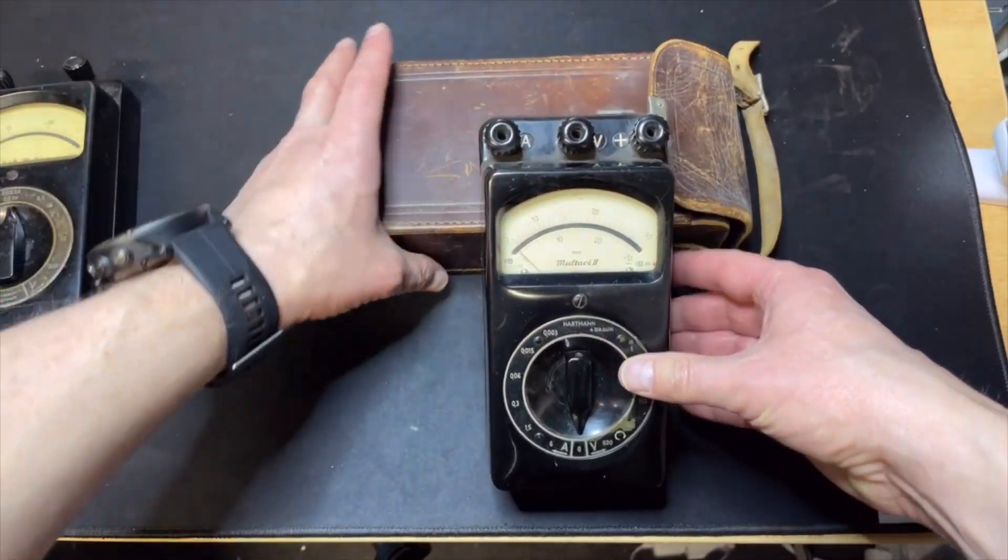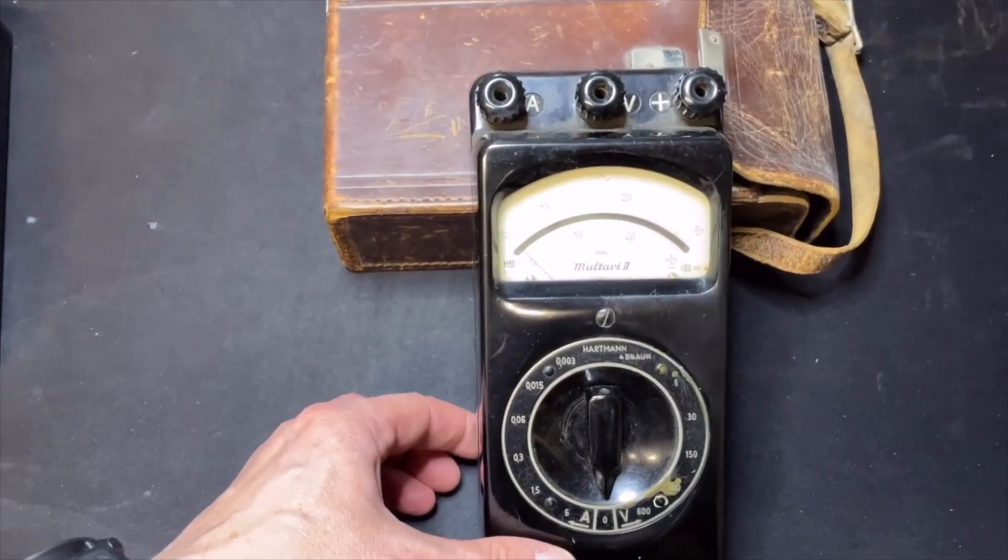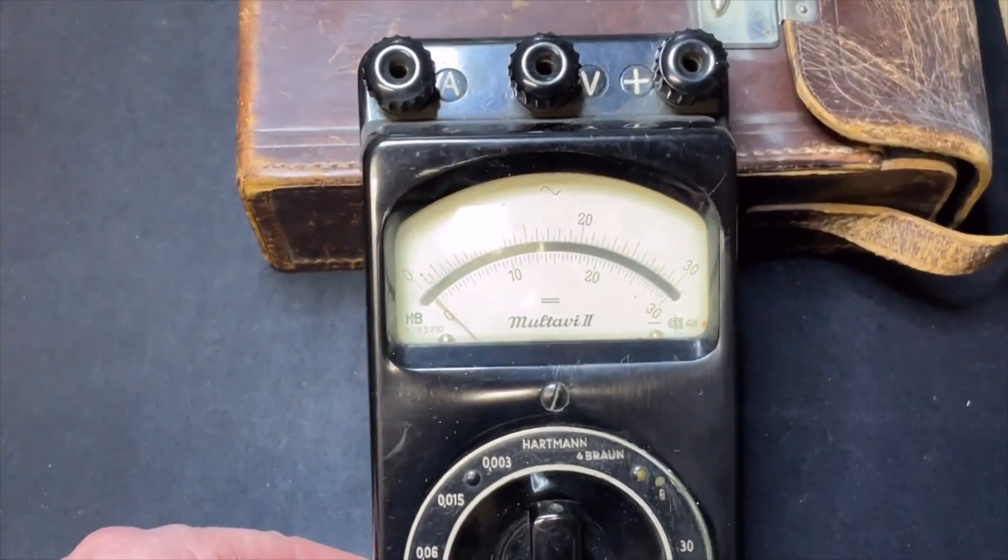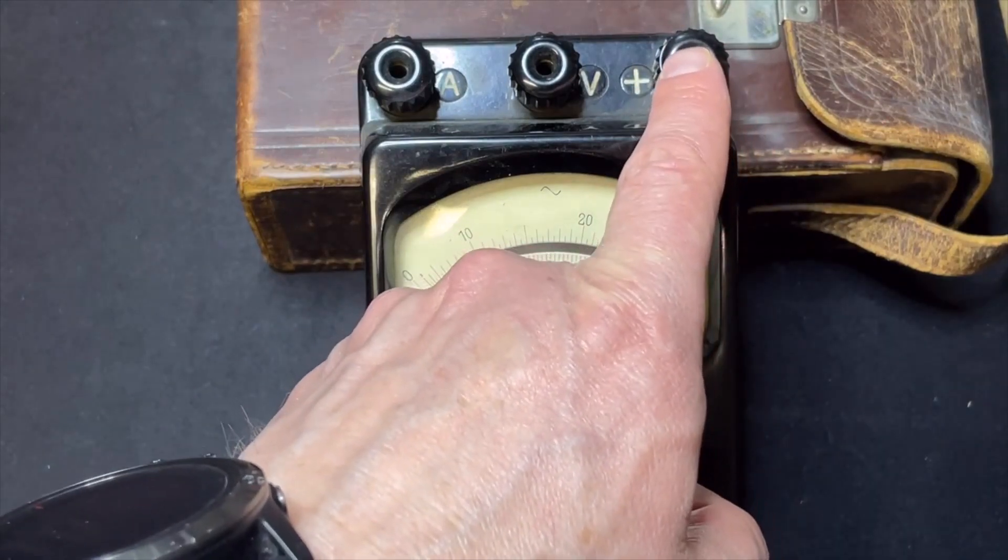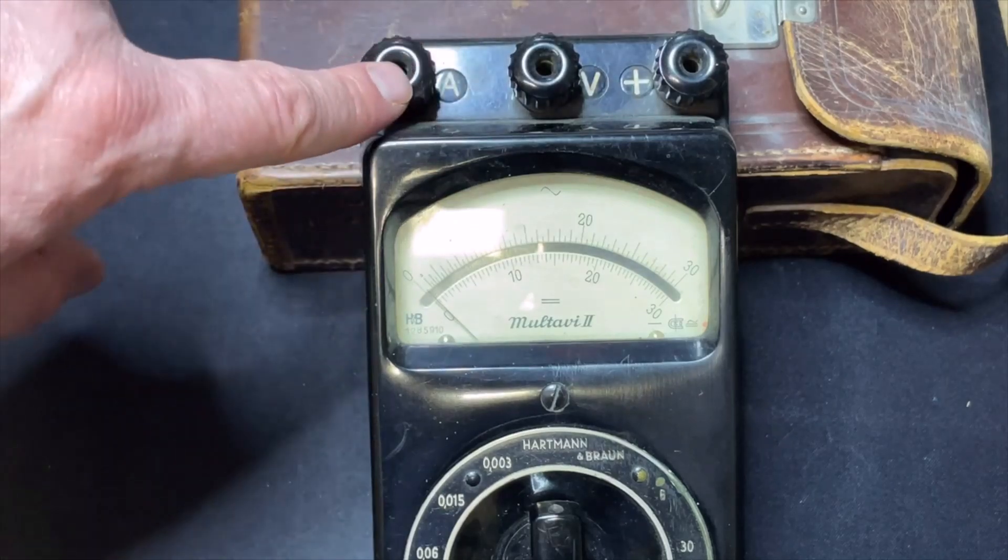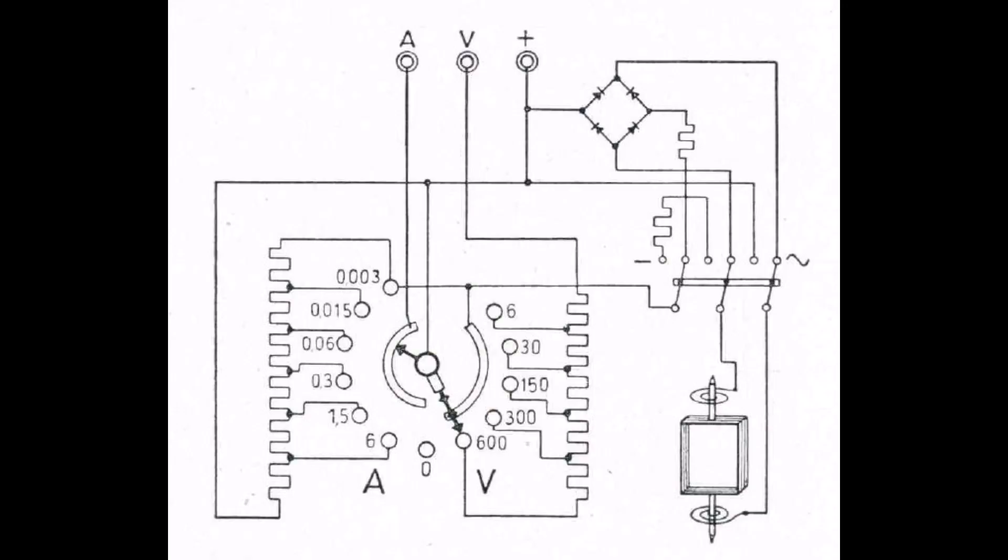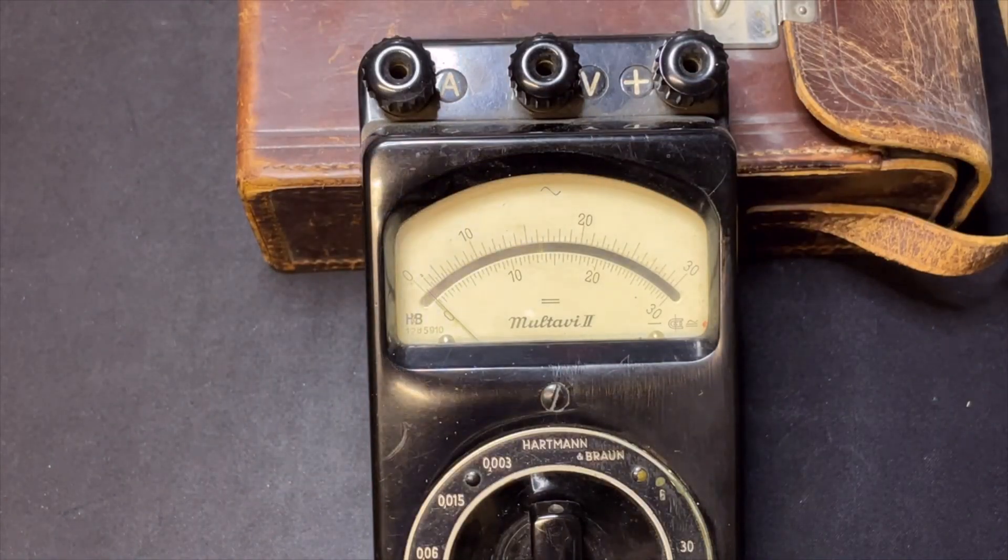Also a fun fact is, if we zoom in, you can see that the common connector here is actually the positive, and then the negative for the voltage here and then the negative for the amps right here. So that's kind of, well now it would be the other way around.